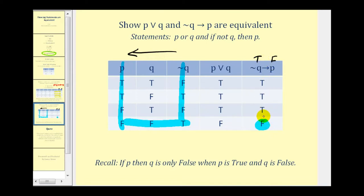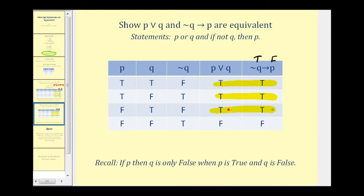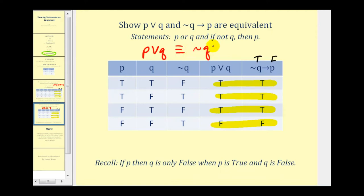Everything else is true. If we take a look at these last two columns, we have true, true, true, true, true, true, and false, false. Therefore, we've shown these statements are equivalent: p∨q is equivalent to if ¬q then p.